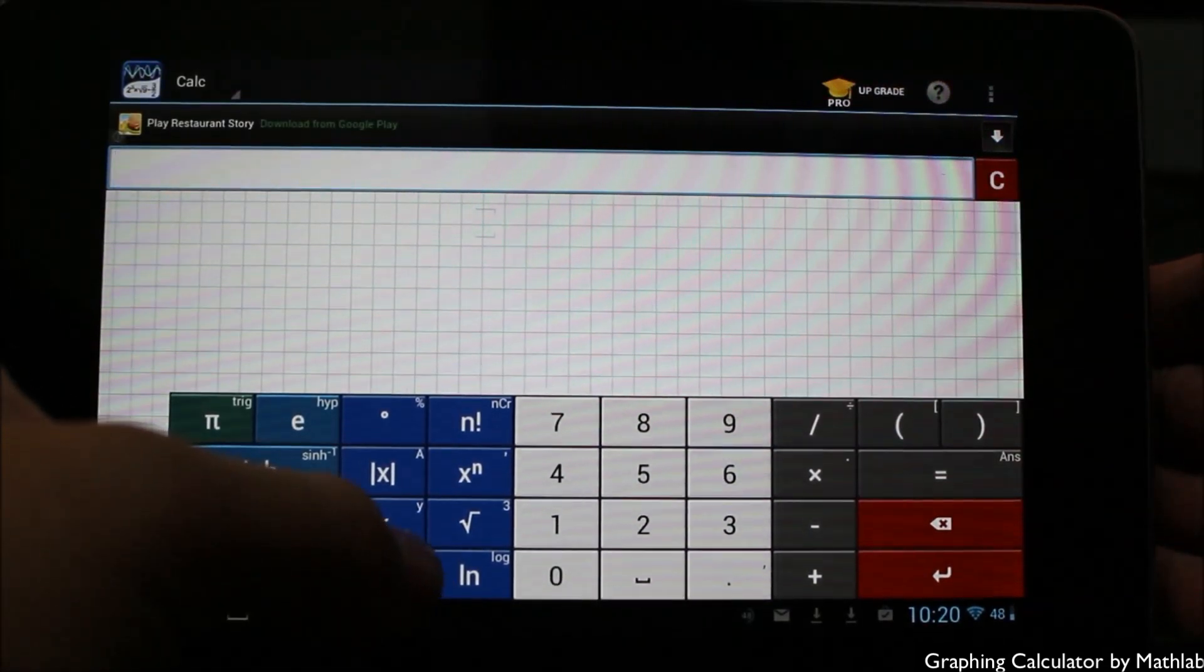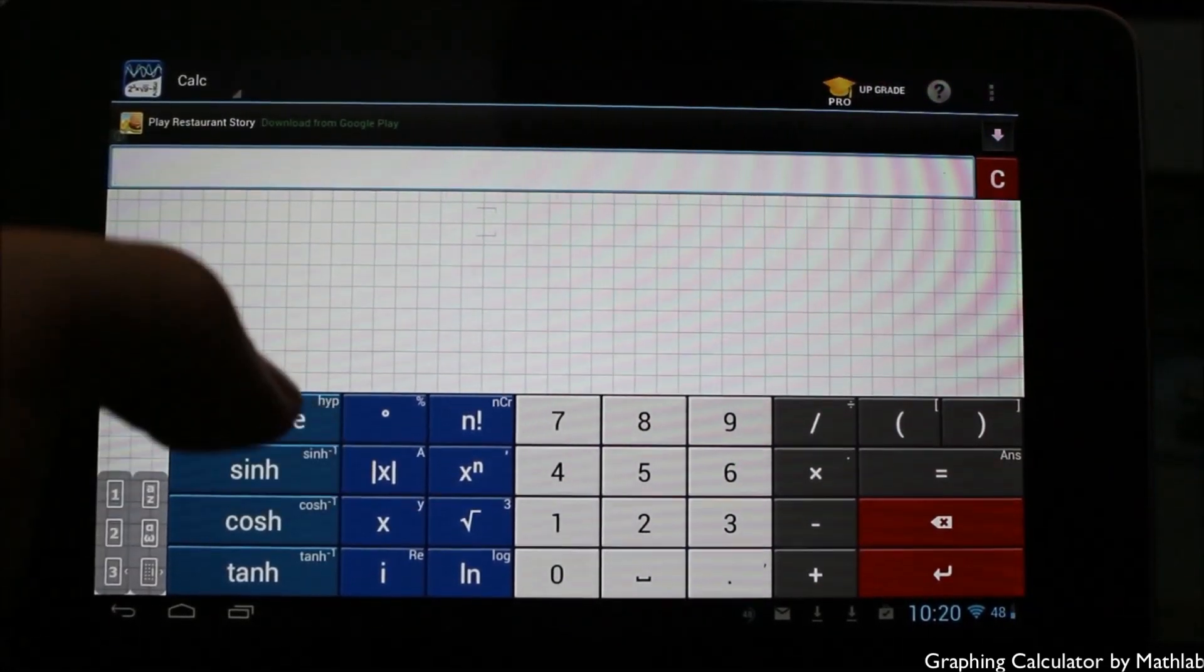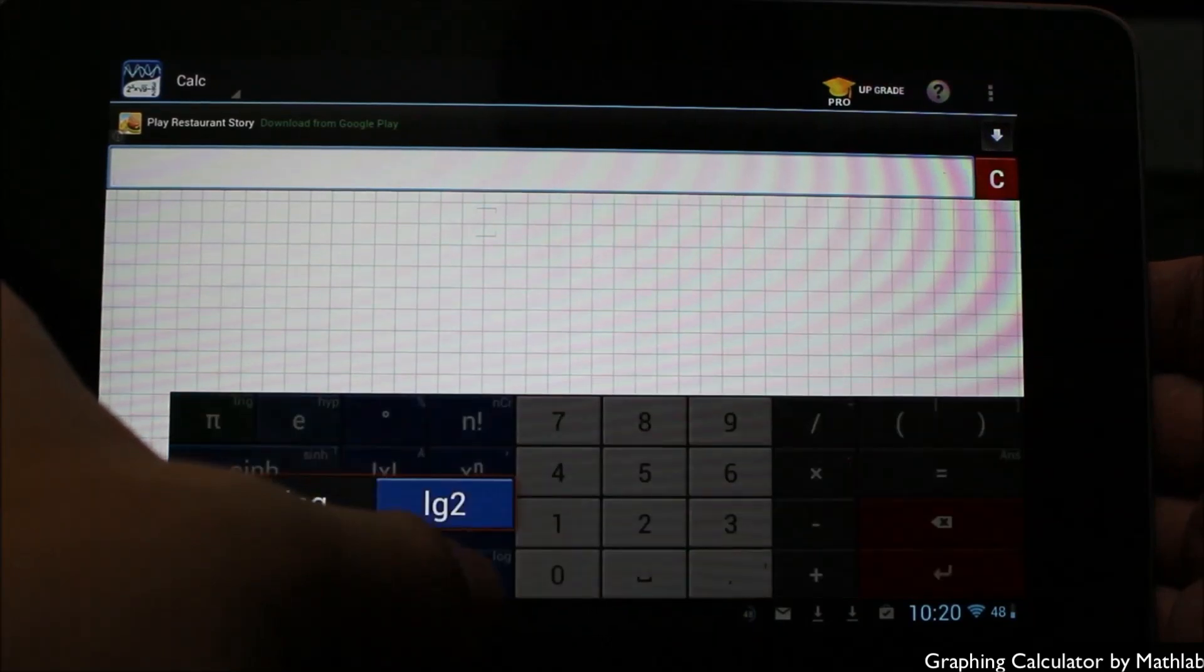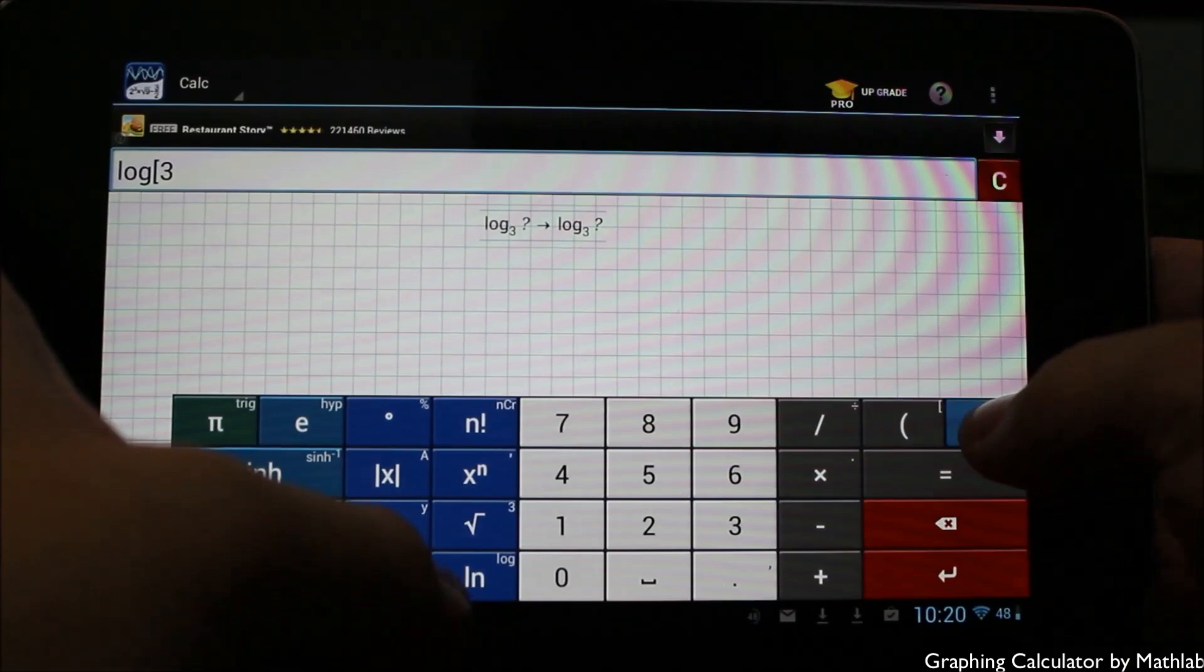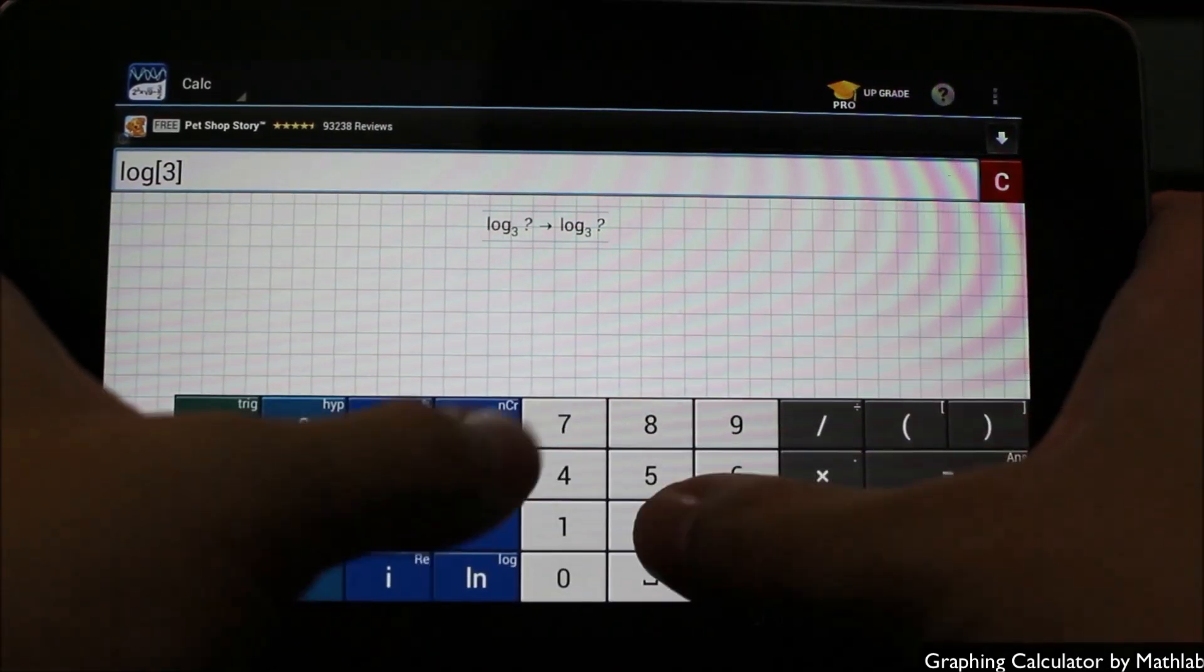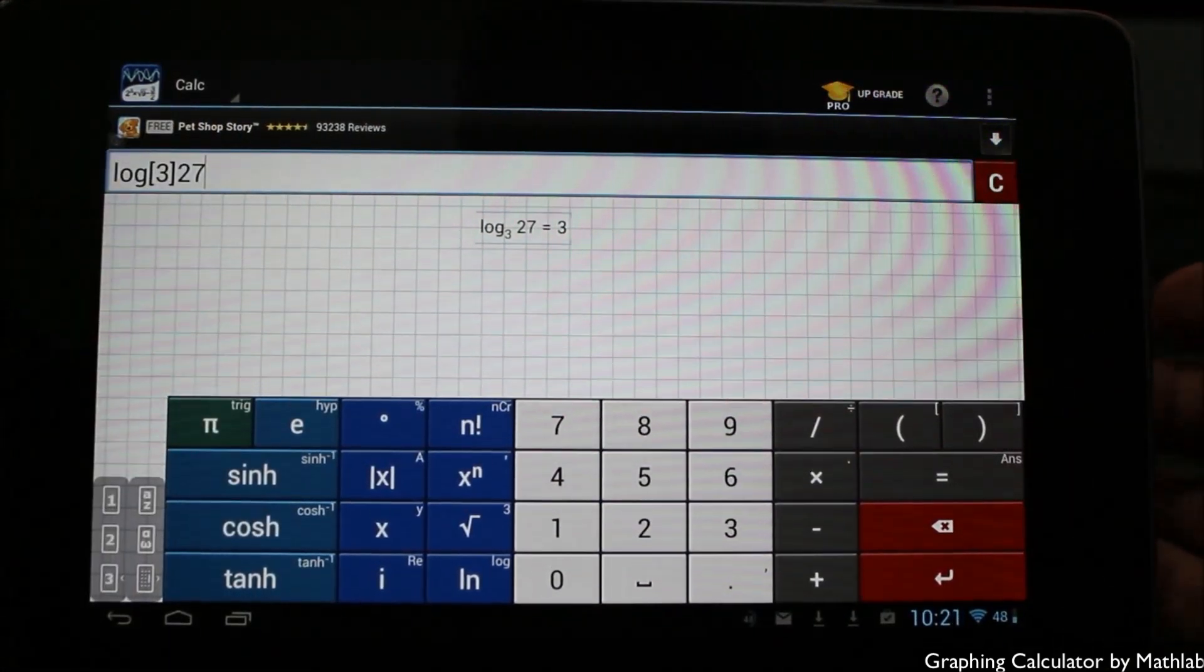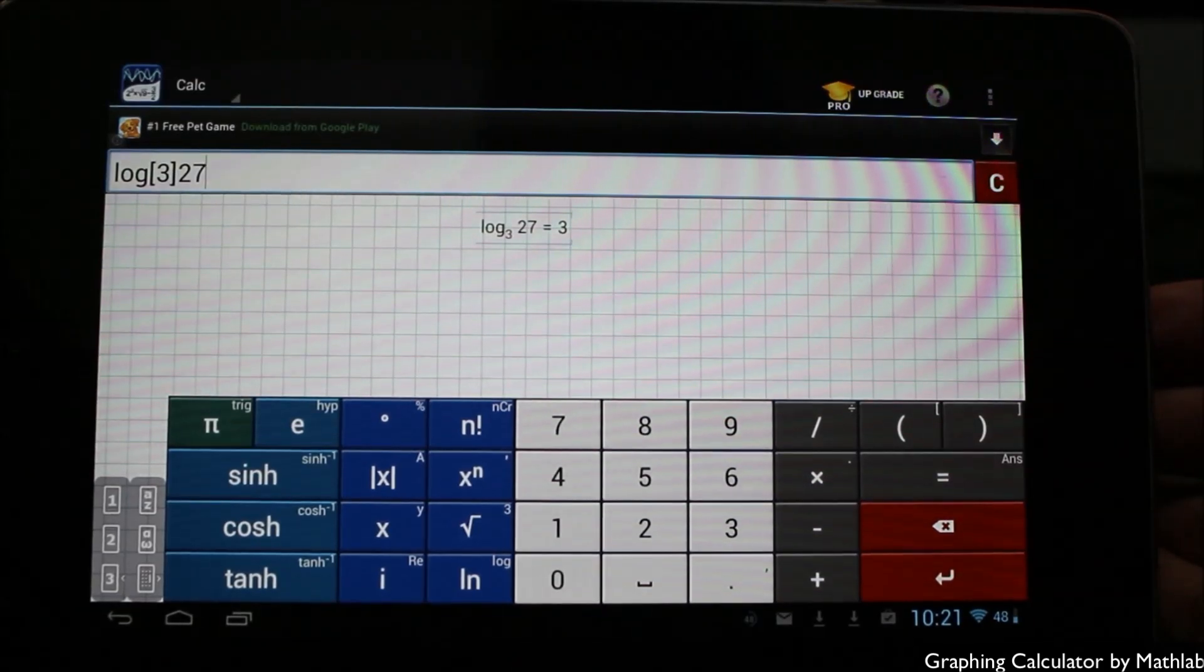Last but not least, you have LN for logarithms. This is used for counting different kinds of logarithms. For example, we can hold it here, you get the options. Let me give an example here: put brackets, three, hold it and get the bracket here, 27, and you can see it will equal three because in this case three times three times three is 27.